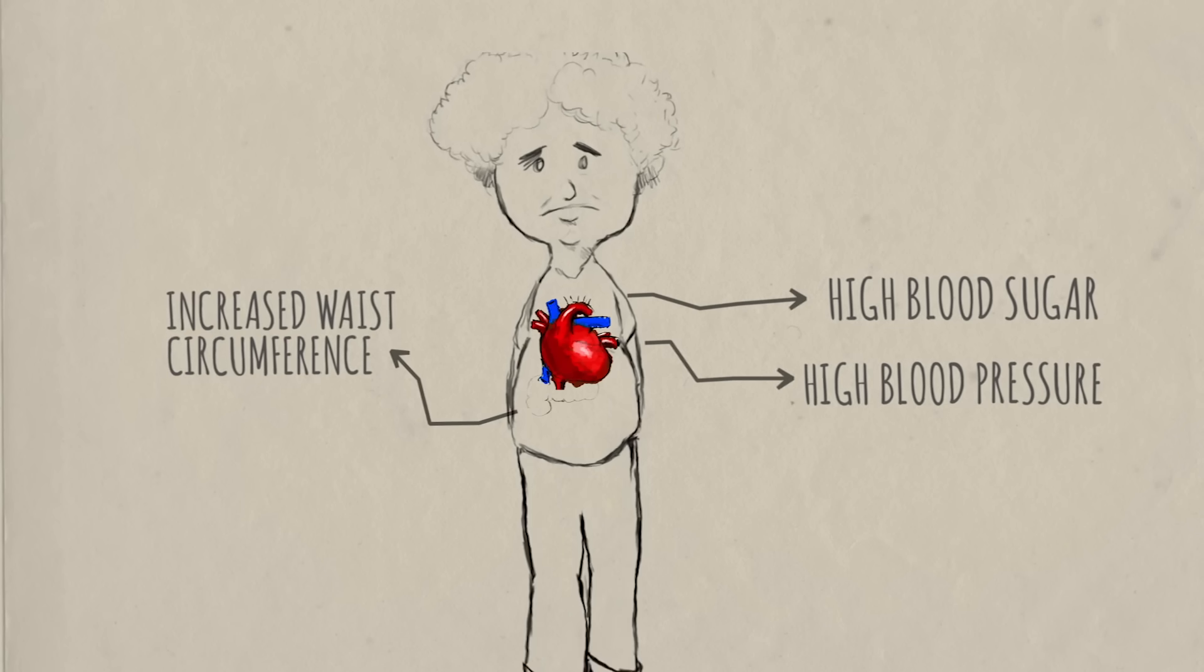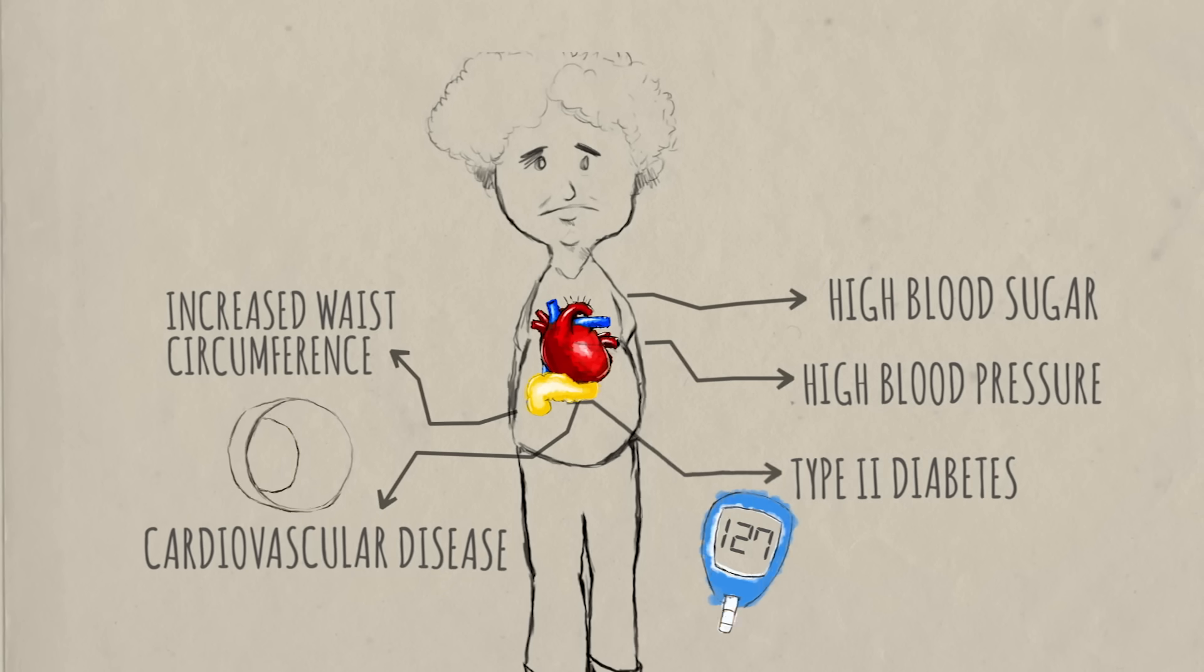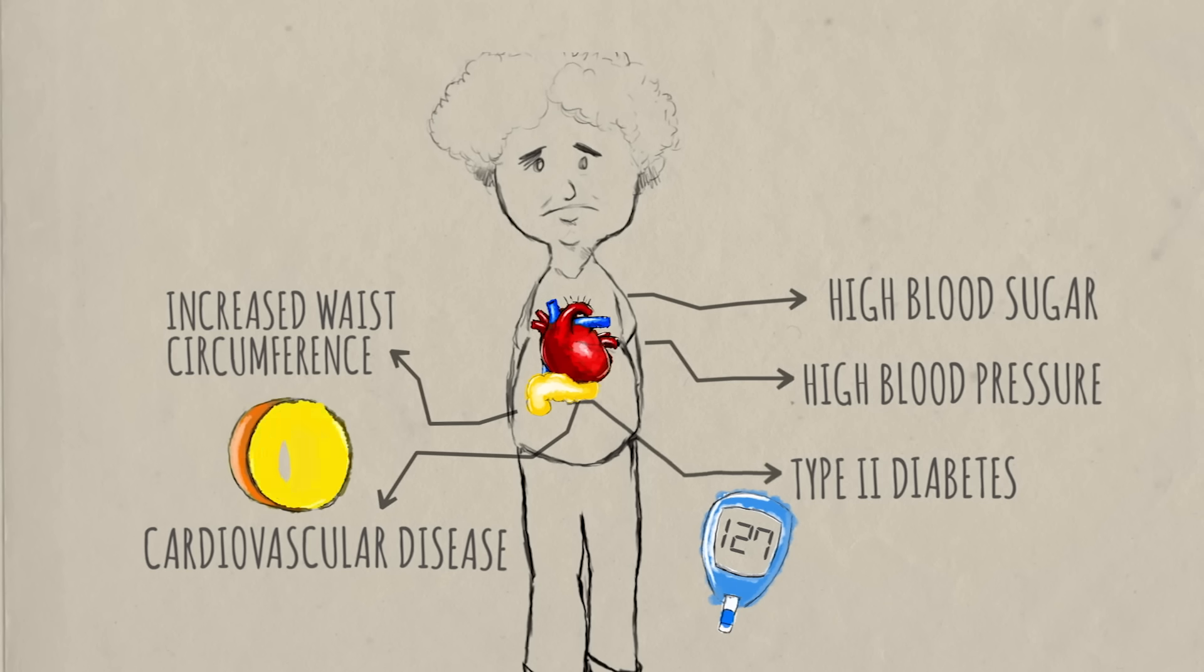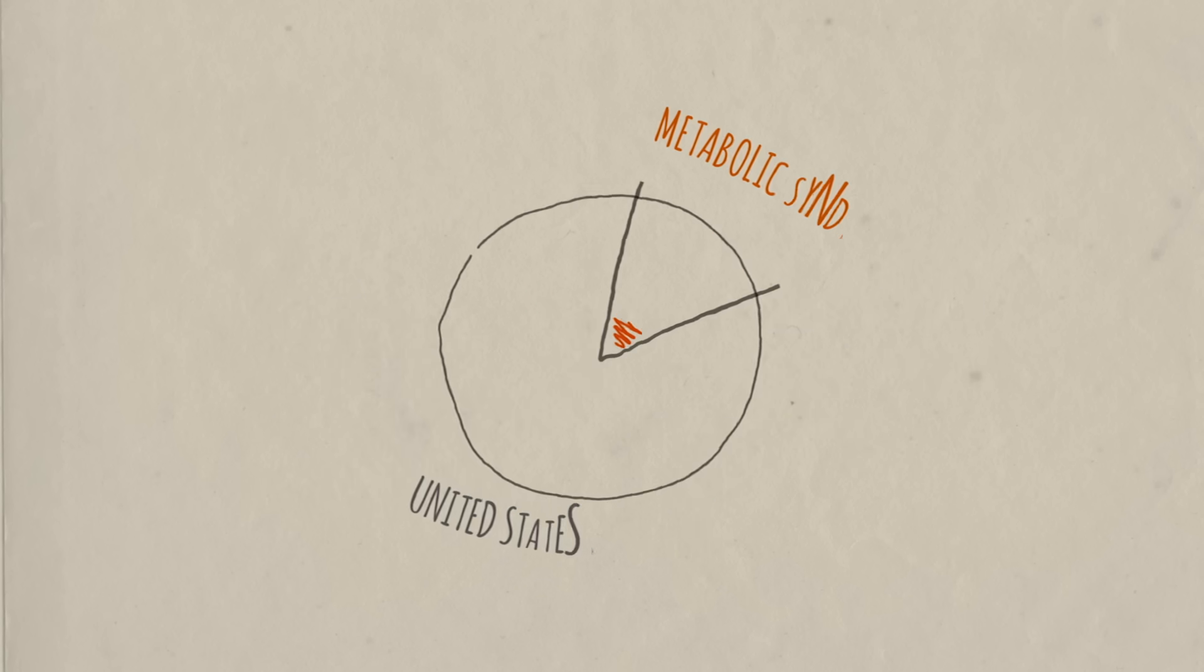It increases the risk of developing conditions like cardiovascular disease and type 2 diabetes, and its prevalence is rapidly increasing all over the world. As much as 32% of the population in the U.S. has metabolic syndrome.